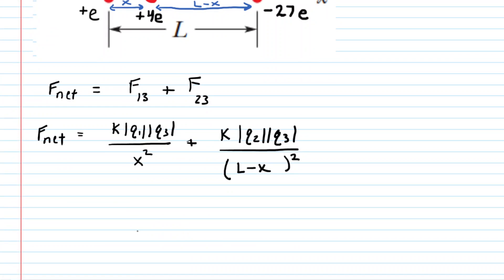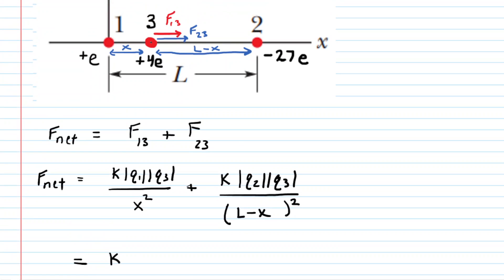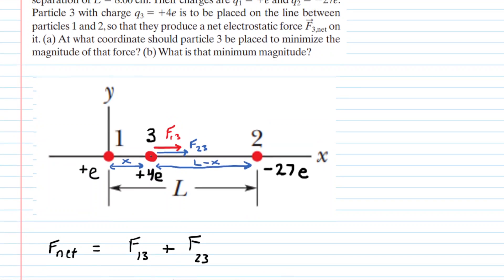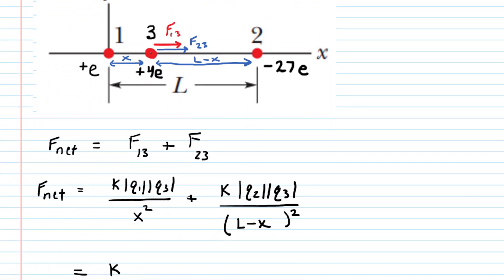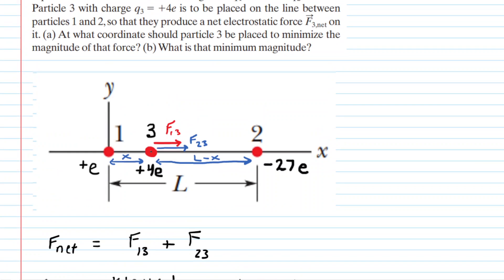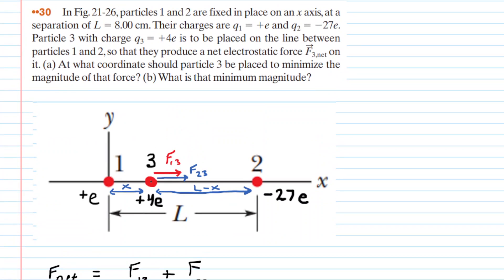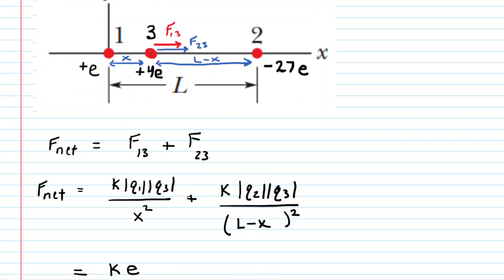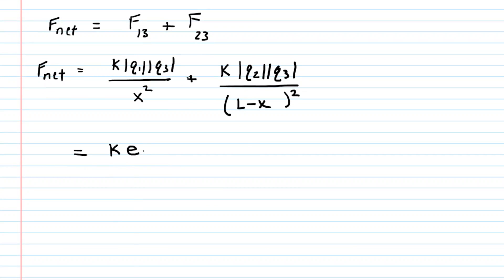What we can do next is plug in some values for the charges. We'll leave k as a constant for now. Q1 was given a value of positive e. Since we're taking the absolute value of it, we'll just say e. And then Q3 was given a value of positive 4e. And again, because it's already positive, we don't really need the absolute value. So we'll just have times 4e. And then this is all divided by x squared.